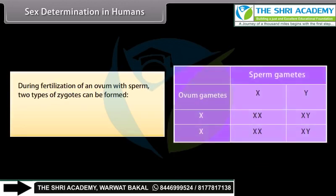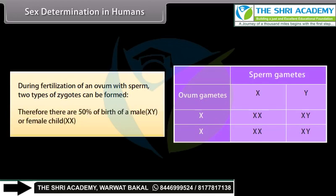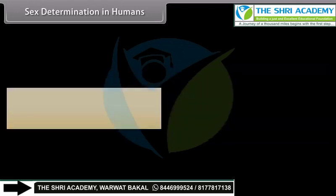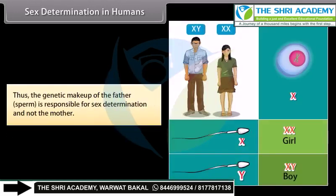During fertilization of an ovum with sperm, two types of zygotes can be formed. Therefore, there are 50% chances of birth of a male (XY) or female (XX) child. Thus, the genetic makeup of the father's sperm is responsible for sex determination and not the mother.